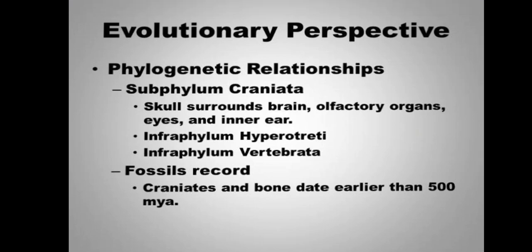First of all, we will talk about some evolutionary perspective. We will take the classification according to fishes. All of the Craniata belong to the craniata, meaning those which have a cranium. The skull in this phylum surrounds the brain, and they have olfactory organs, eyes, and an inner ear.